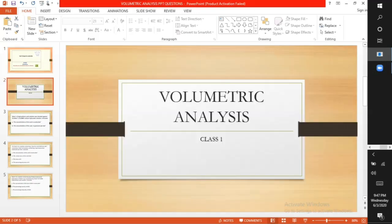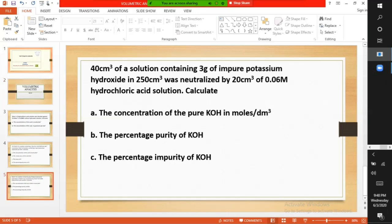Welcome to my third class on volumetric analysis. 40 cm³ of a solution containing 3 grams of impure potassium hydroxide in 250 cm³ was neutralized by 20 cm³ of 0.06 molar hydrochloric acid solution.